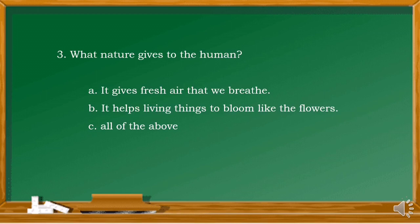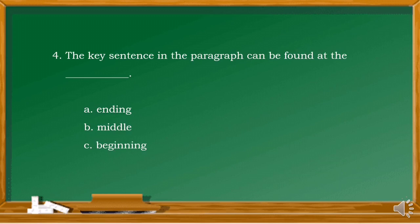For number 3, what does nature give to humans? A. It gives fresh air that we breathe. B. It helps living things to bloom like the flowers. Or letter C. All of the above. The answer is letter C. Number 4: the key sentence in the paragraph can be found at the blank. A. Ending. B. Middle. Or C. Beginning. The answer is letter C — beginning.